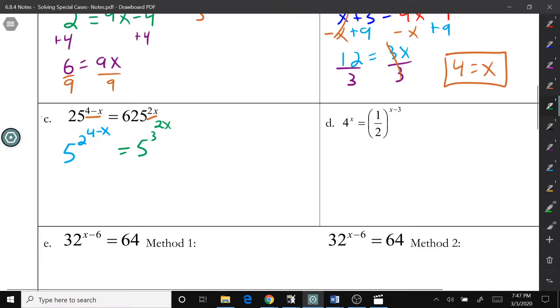So we have an exponent with an exponent. You may remember this from algebra 1, but if you have a power raised to a power, you multiply the powers. So I'm going to multiply these. 2 times 4 is 8. 2 times negative x is negative 2x. And then over here, 3 times 2x is 6x. So we add 2x to both sides. When we add 2x to both sides, we get 8 equals 8x. And then when we divide both sides by 8, we get 1 equals x.